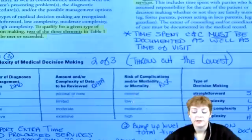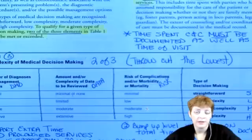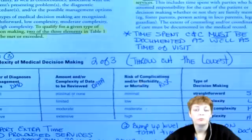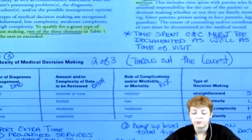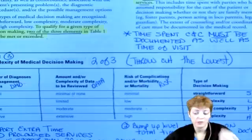The third column is risk — risk of complications and/or morbidity or mortality. There's minimal, low, moderate, or high risk. There is a table of risk on the CMS website — if you Google 'E&M table of risk,' it is a set table. For example, prescription meds: if a prescription is given, it's automatically a moderate risk. Minimal would be something like 'go home and gargle' or rest. High would be recommending elective surgery or something like that.